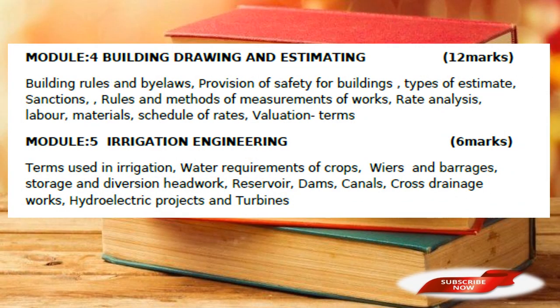Module 4 is building drawing and estimate. Topics include: rules and bylaws, provision of safety for buildings, types of estimate, sanctions, rules and methods of measurement of works, rate analysis, labor, material, schedule of rates, and valuation. Estimation and valuation are important terms. The patterns are important to look at from previous exams. Building drawing is extremely important. Now we have to look at the building codes — in BCI or in KMVR. The rules are important.